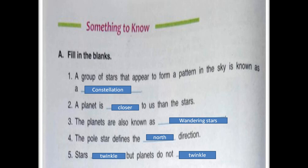First one, a group of stars that appear to form a pattern in the sky is known as constellation. Second one, a planet is closer to us than the stars.